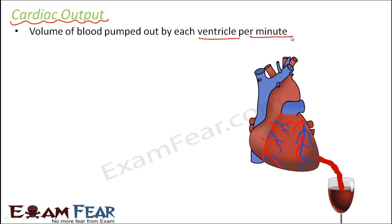Now, which chamber of the heart is responsible for pumping out blood? The ventricles, because ventricles are the pumping chambers. The auricles only receive blood. So how much blood the ventricles pump out every minute will define the cardiac output of the human heart.